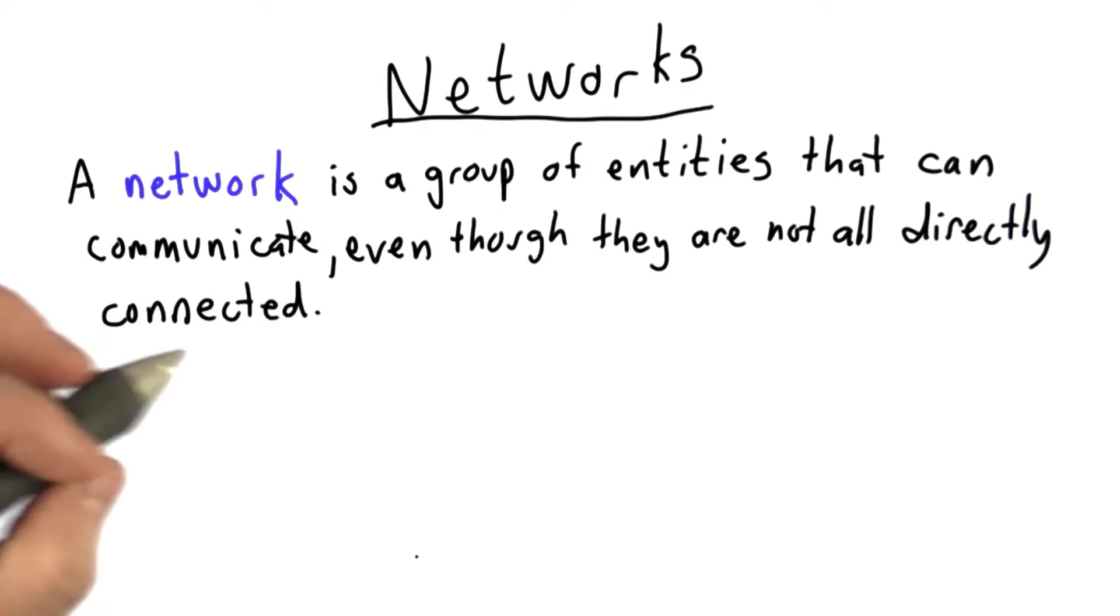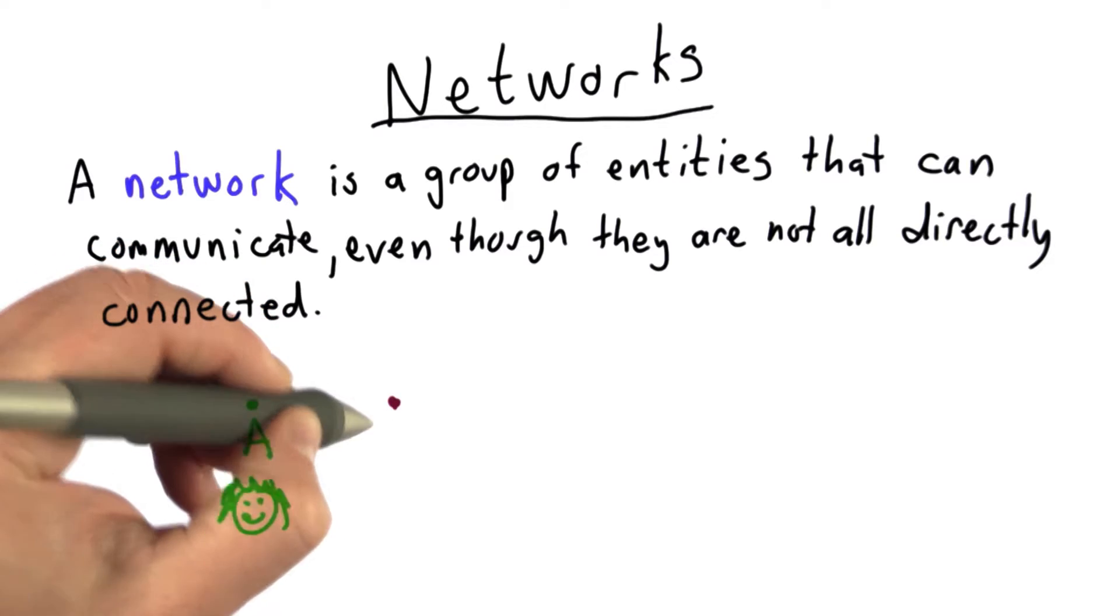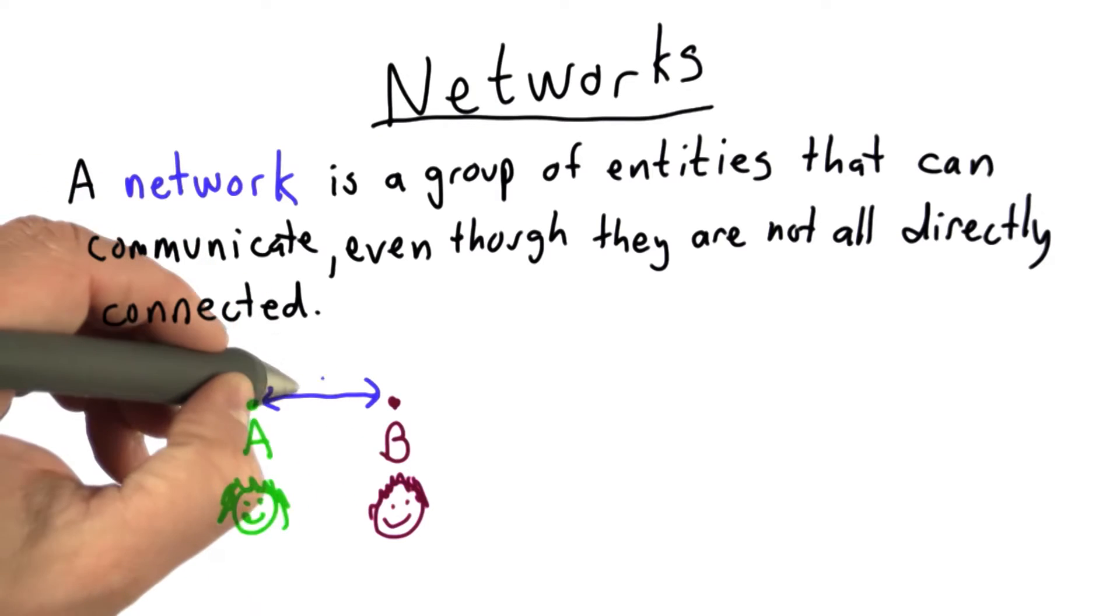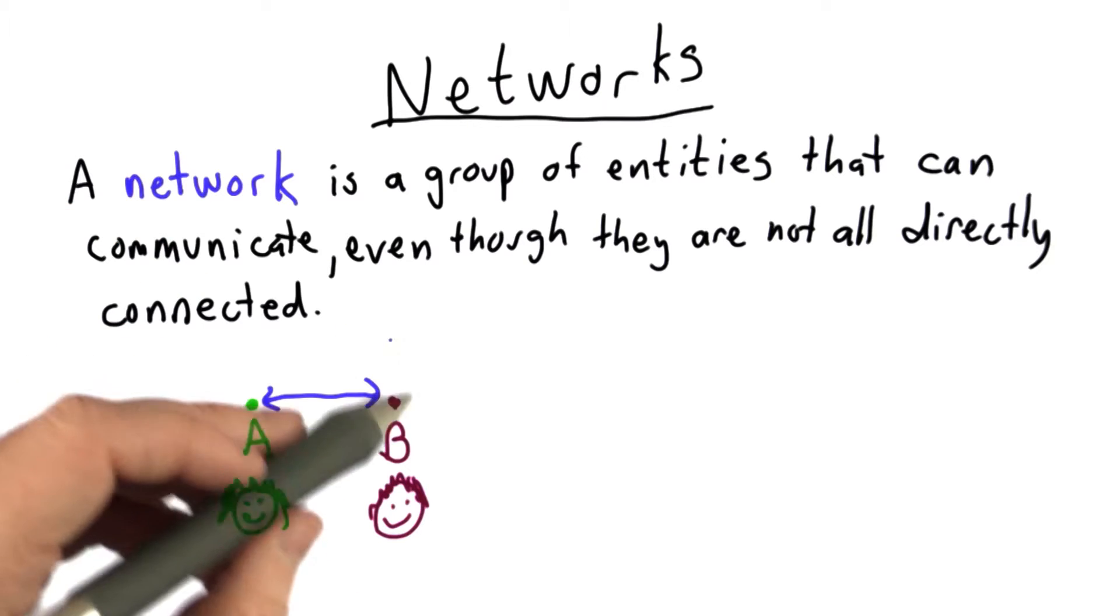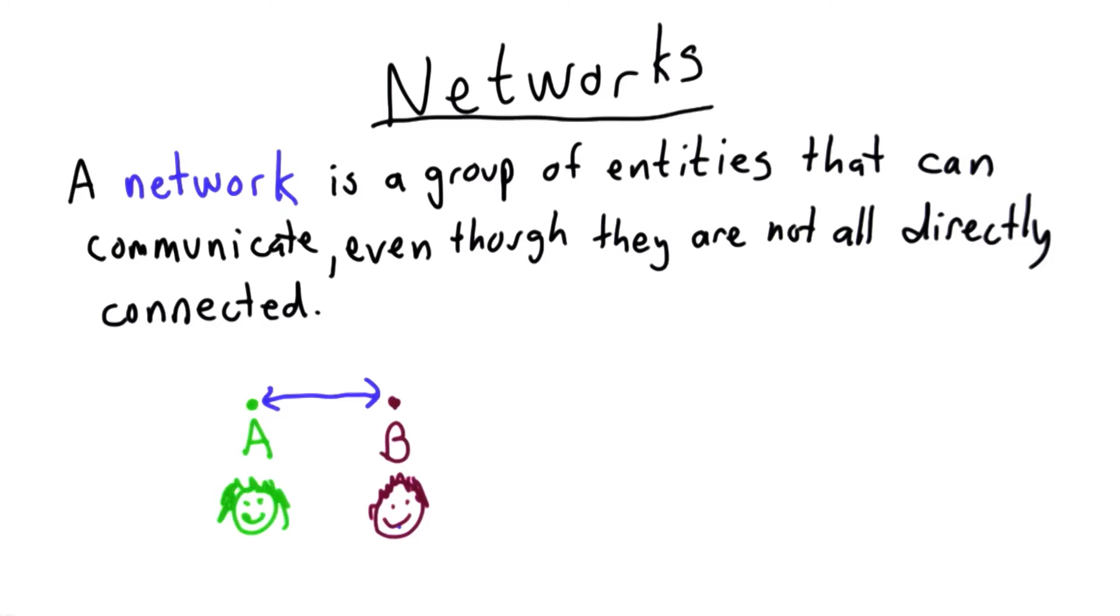So here's an example to show what that definition means. So we have Alice, and we have Bob. And Alice and Bob know each other and can talk to each other. The way they talk, we can call the channel, that could be just talking in person, that could be talking over a telephone. We're going to say that just this is not enough to be a network. This is just two people having a conversation.